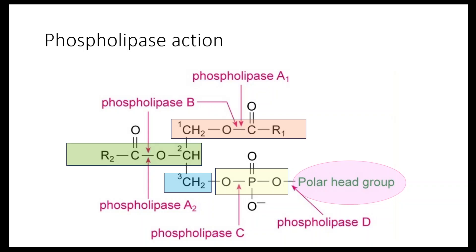There is a group of enzymes called phospholipases, belonging to the hydrolase group, which act on specific sites and break bonds in phospholipids. Phospholipase A1 acts on the first carbon, phospholipase A2 on the second carbon, phospholipase C on the phosphoric acid bond, phospholipase D between the phosphoric acid and the polar head group, and phospholipase B on either the first or second position. These are common MCQ topics. Importantly, many snake venoms — especially from the viper group — contain phospholipases that cause hemolytic reactions through this hydrolysis.